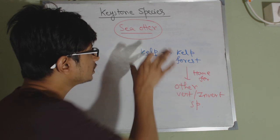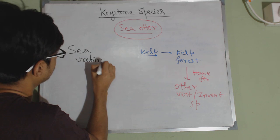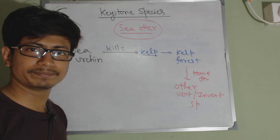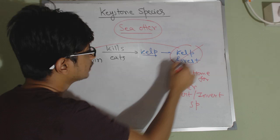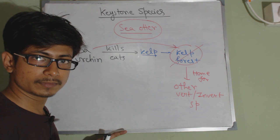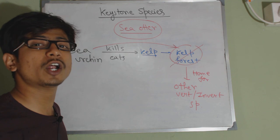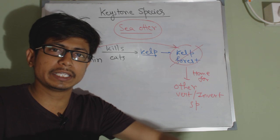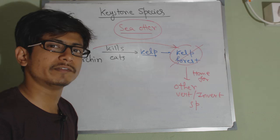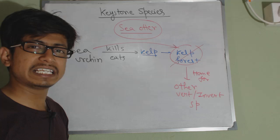Now there is another threat to this kelp forest, and that is sea urchin. Sea urchin kills or eats the kelp. Sea urchin can destroy the kelp forest. So if sea urchin destroys the kelp forest, the home for many species will be gone. Other invertebrate species cannot live because if there are kelp forests they can survive, they can put themselves together and survive from predators. As there is no kelp forest, the ocean will be completely transparent so other fishes can eat them.